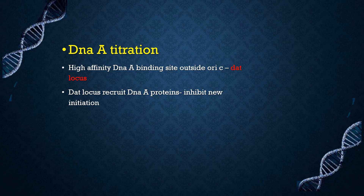Another method of regulation is by DnaA protein titration. DnaA protein is the initiator protein. There are high-affinity DnaA binding sites outside oriC called the datA locus, which gets replicated during initiation. After initiation, these datA loci are replicated, and since the concentration of DnaA protein remains the same, the increased datA loci recruit DnaA protein away from oriC. There is no longer enough DnaA protein to bind oriC, thus regulating replication.